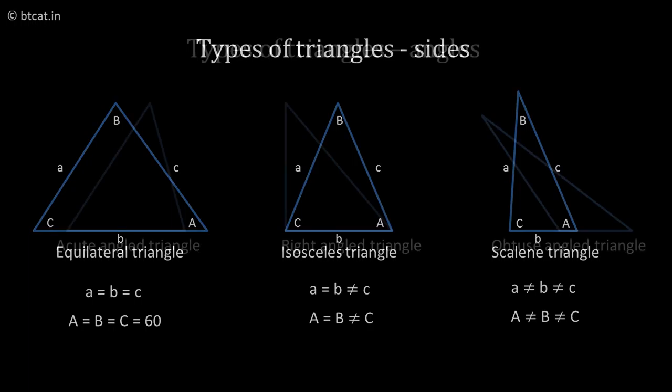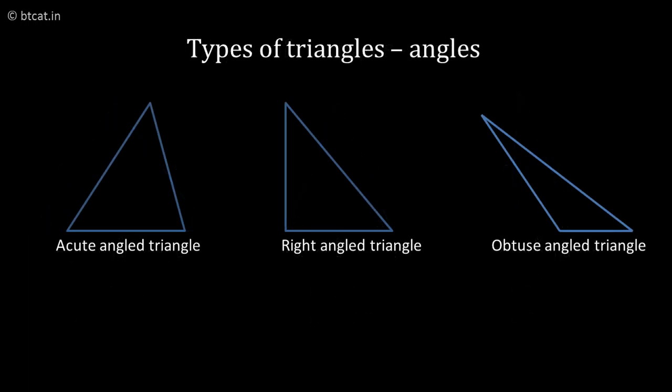There are three types of triangles based on angles as well: acute angle, right angle, and obtuse angle. They are based on the greatest angle of the triangle. You have to just look at the greatest angle. If the greatest angle is greater than 90 degrees, we call it obtuse angled triangle. If the greatest angle equals 90 degrees, we call it right angled triangle. And if the greatest angle is less than 90 degrees, we call it acute angled triangle.